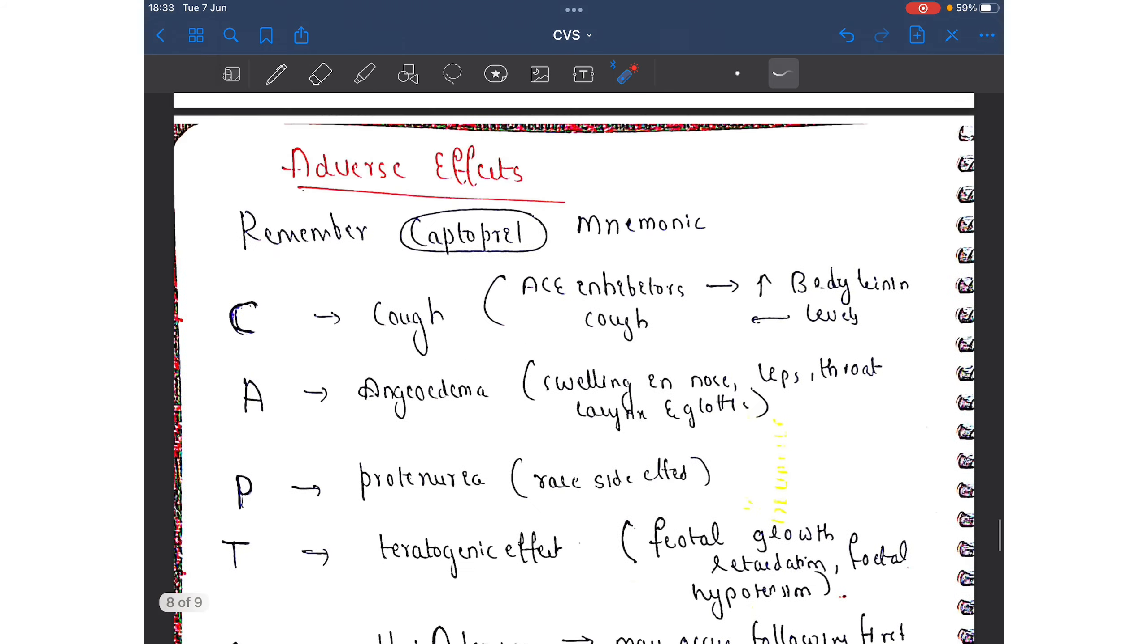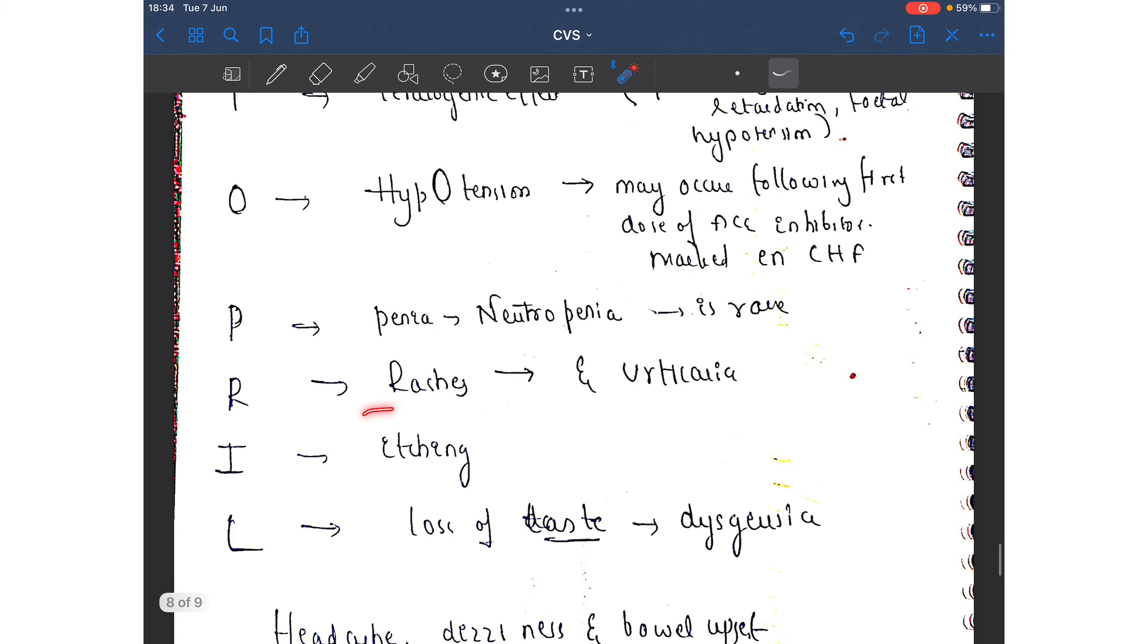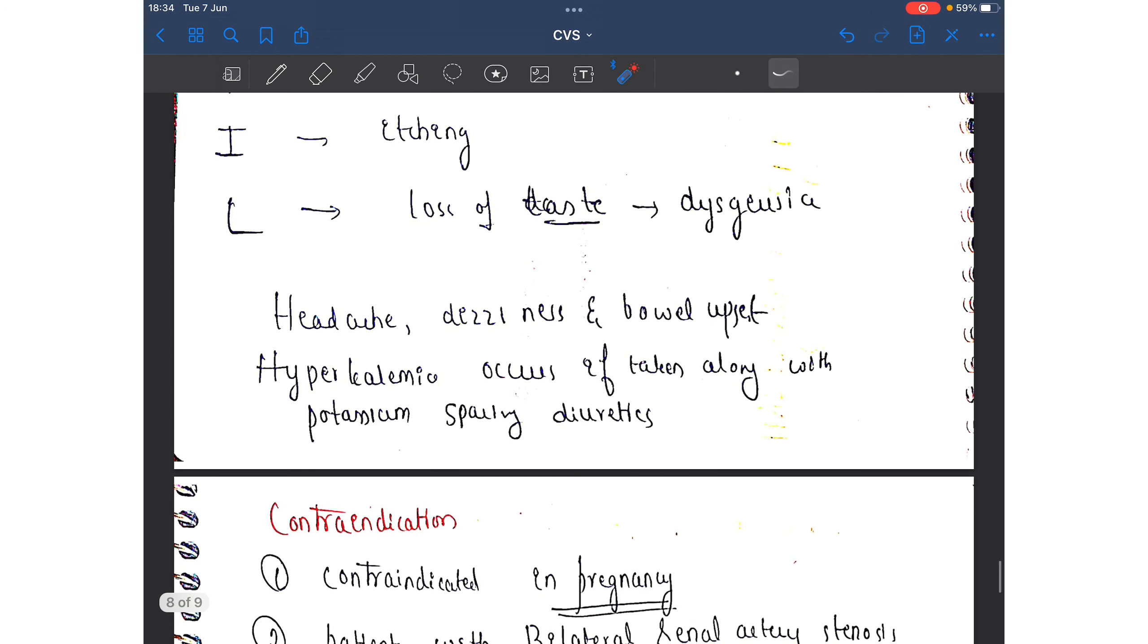All these are the side effects: cough, angioedema, teratogenic effect, hypotension following the first dose, neutropenia, rashes and urticaria, itching, and loss of taste. Along with this, headache, dizziness, and bowel upset may occur.